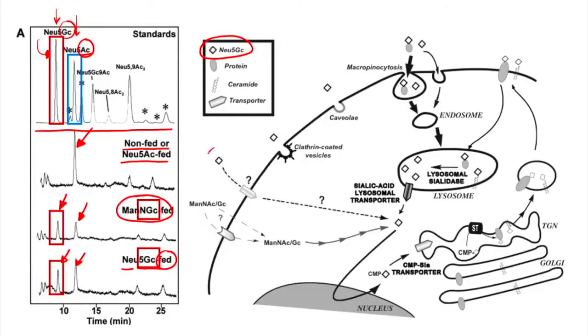It comes in from the diet, it is absorbed through macropinocytosis, goes to the lysosomes, it then goes through into the Golgi apparatus, and then it gets placed and put onto the surface of the cells.